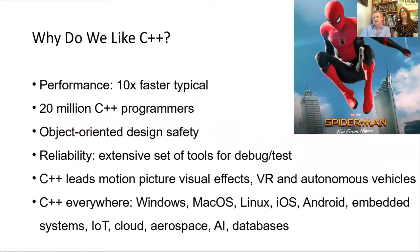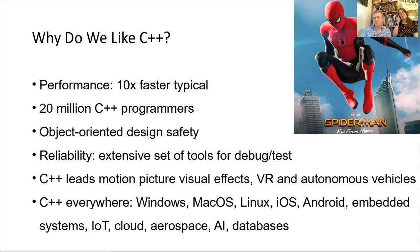Why do we like C++? It's typically 10 times faster than other tools. There are 20 million C++ programmers out there, so it's possible to staff a team. It's object-oriented with constructors, destructors, and encapsulation. For reliability, it has an extensive set of tools, which is very important for safety-critical and real-time systems.